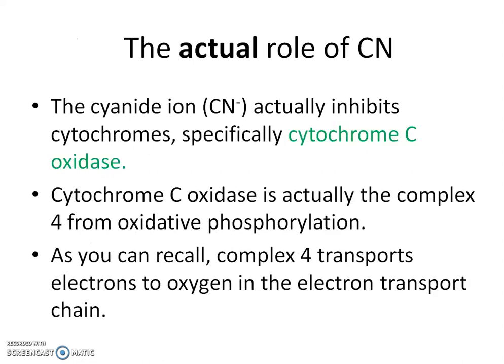The actual role of cyanide is that the cyanide ion, CN-, actually inhibits cytochromes, specifically cytochrome C oxidase. Cytochrome C oxidase is actually complex 4 from oxidative phosphorylation, or the electron transport chain.